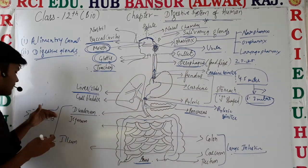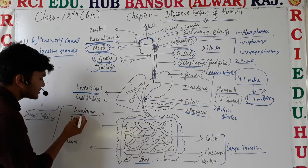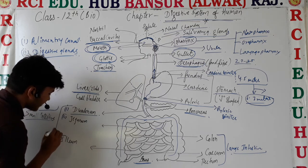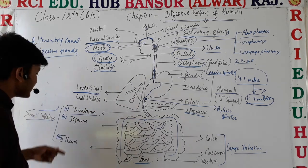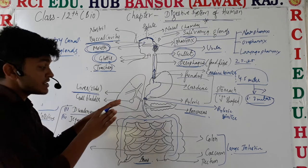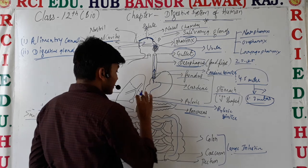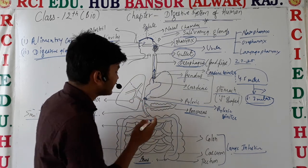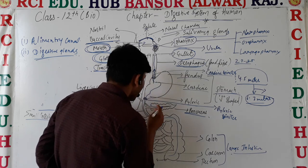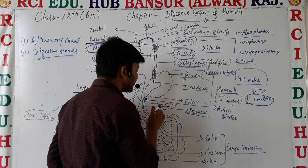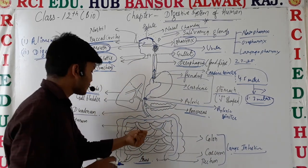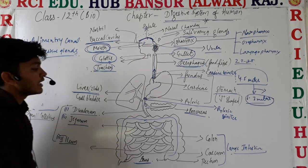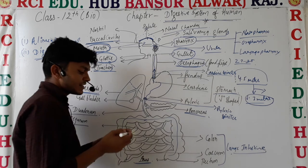The small intestine is divided into three parts: first is the duodenum, which is J-shaped; second is the jejunum; and third is the ileum. The jejunum and ileum are coiled structures that are surrounded by the large intestine. The ileum then connects into the large intestine.